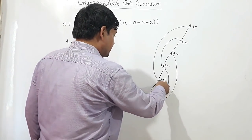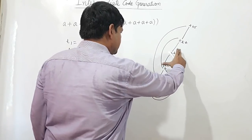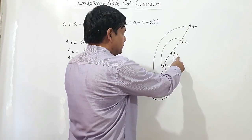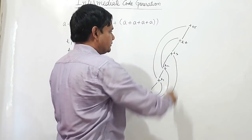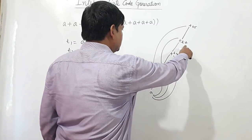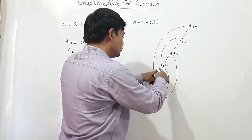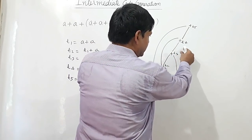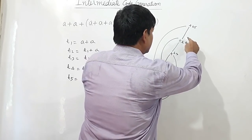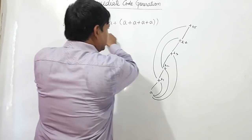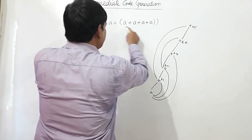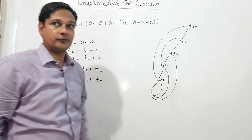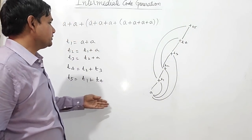Here, a plus a plus a plus a plus a — four a's have been evaluated, so t3 is containing the result of four a's, sum of four a's. And t4 is containing the result of the sum of these three a's and these four a's. Now t5 is containing the result of this bracket and these two a's. So this is three a's.